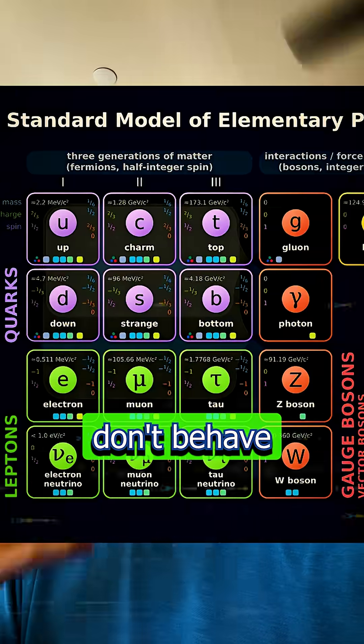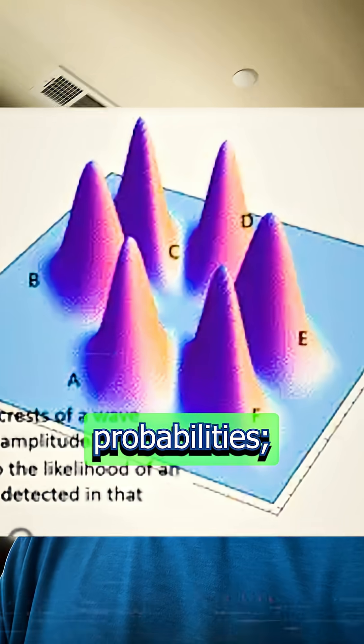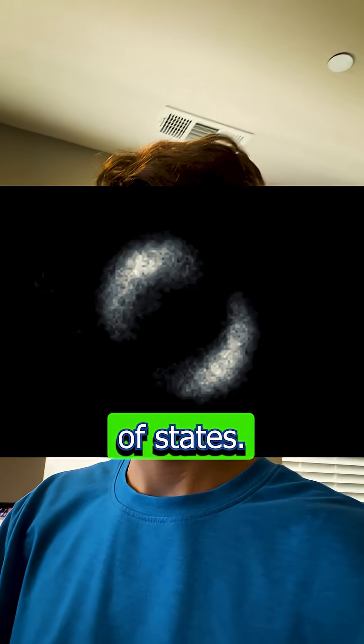Electrons and other subatomic particles don't behave like solid objects. They exist in a fuzzy state of probabilities, or more accurately, a quantum superposition of states, where position and momentum are literally blurred.